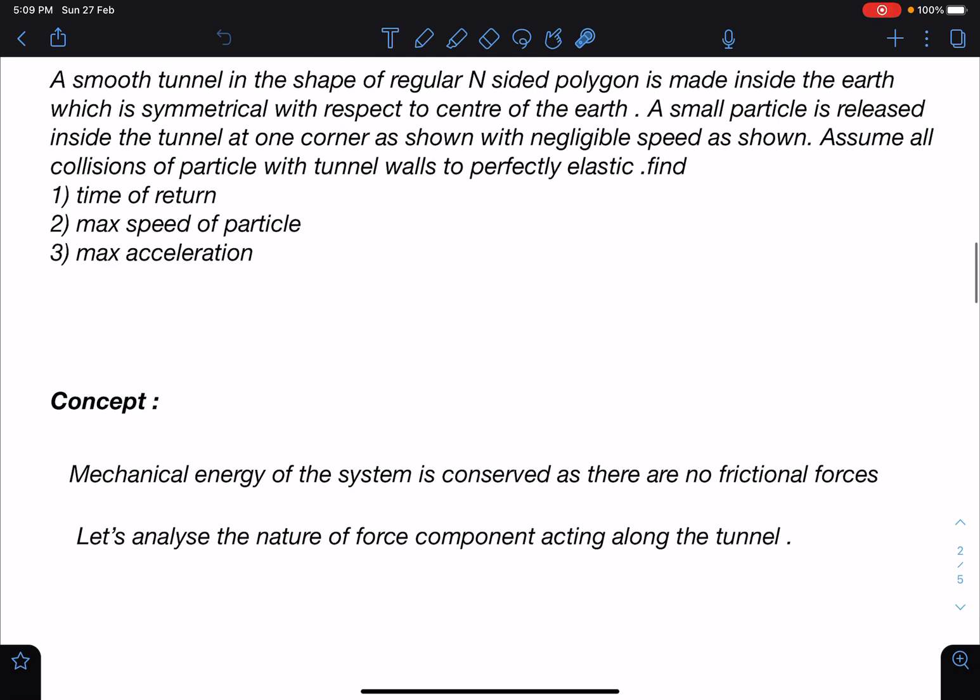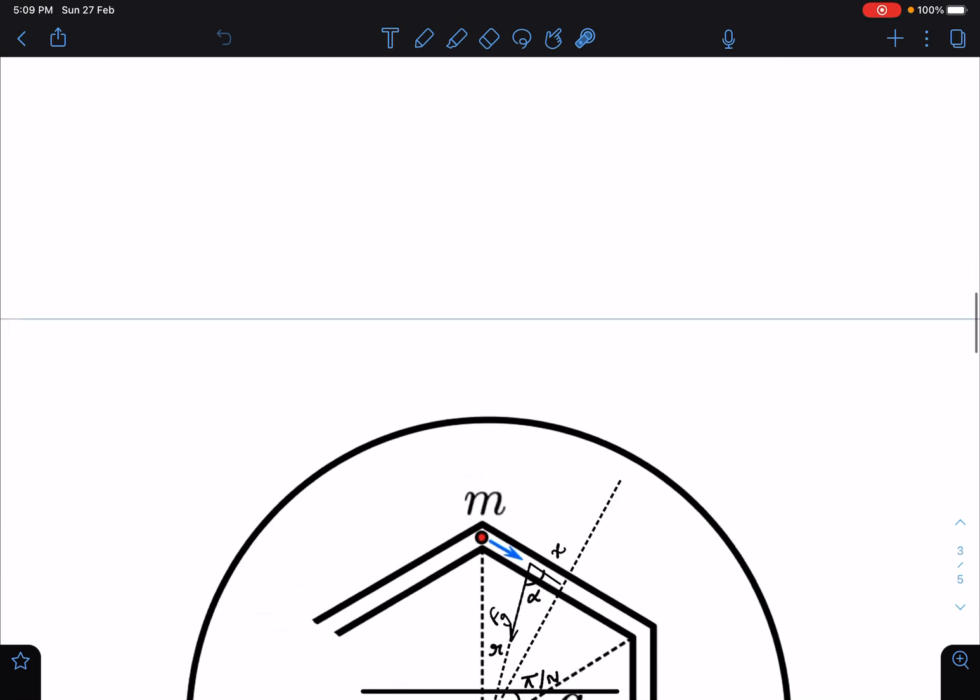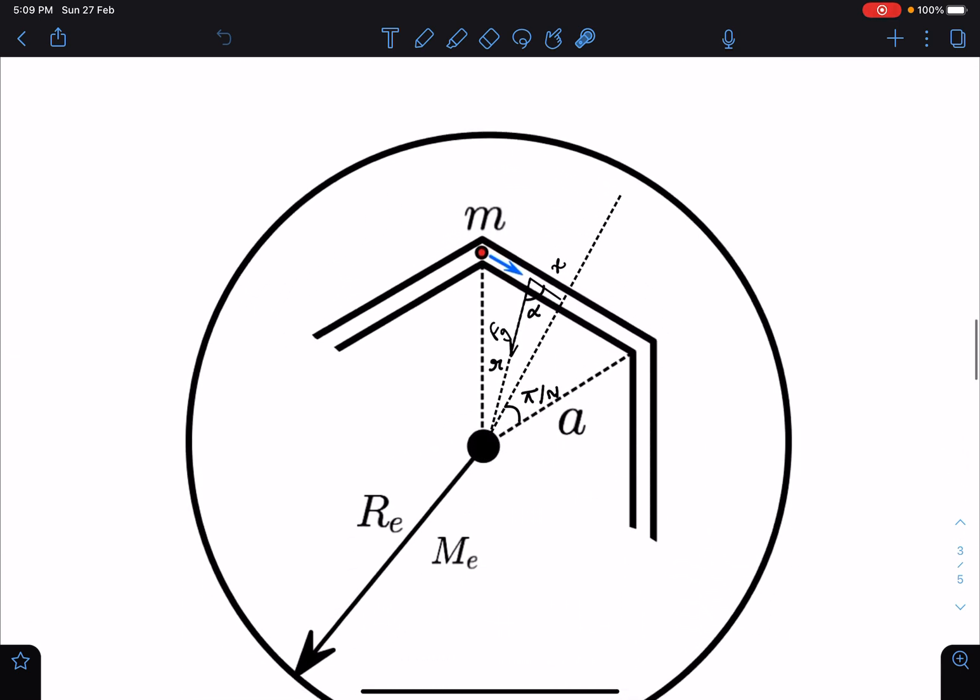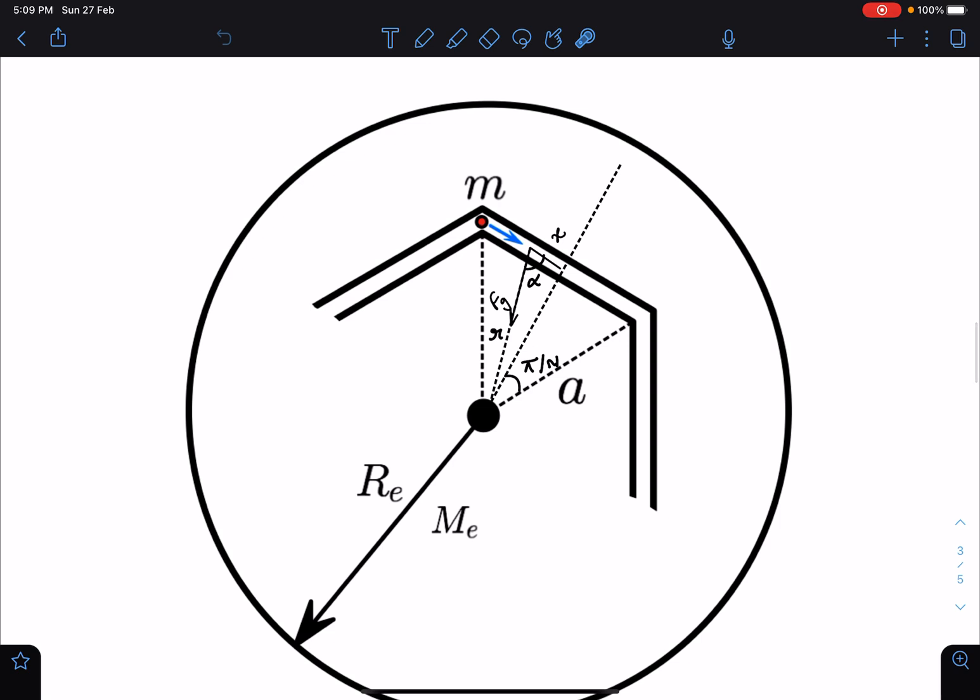It's a very standard problem modified. You can see here once this particle is released from here in the beginning, F_gravity will be acting in this direction so one component of this is acting along the tunnel. Let's say at any time t at this general position when this distance is r and this angle is alpha, the net force here is F_gravity.